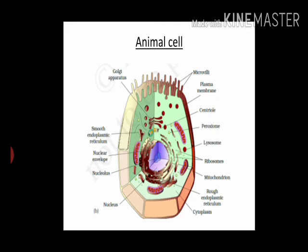Coming to animal cell — this is how the structure of an animal cell looks. Initially when you look at a cell, it seems round and you don't know what is inside. For study purposes, this 3D picture is given so you can know the labellings and the cell organelles. Inside the cell, you can see there is a cell membrane. In the case of animal cell, there is no cell wall — only cell membrane is present.